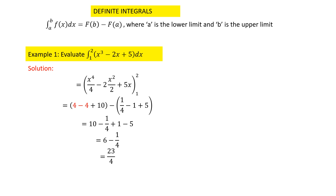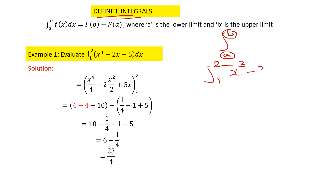Let us now discuss the questions on definite integrals. Definite integrals means integrals with limits — this value is the lower limit and b is the upper limit. In this question I have the integral from 1 to 2 of x³ minus 2x plus 5.